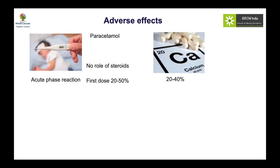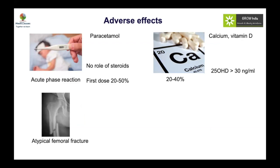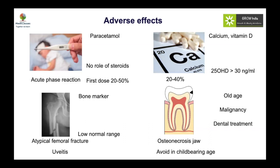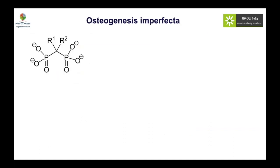Major adverse effects of bisphosphonates include: acute phase reaction — manage with paracetamol, no role for steroids; hypocalcemia, occurring in 20 to 40% of cases — ensure adequate calcium and maintain vitamin D above 30 nanograms/mL; atypical femoral fractures due to intermittent mineralization; and osteonecrosis of the jaw, which is extremely rare in children and mainly reported in adults on long-term therapy for cancer. Dental procedures require caution. Uveitis is another rare adverse effect.